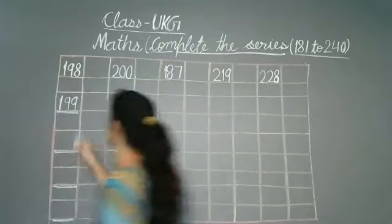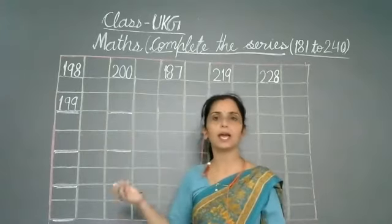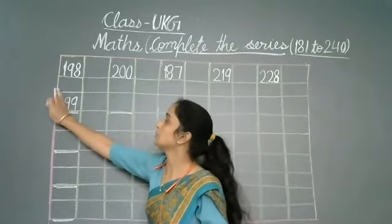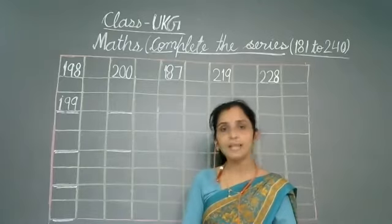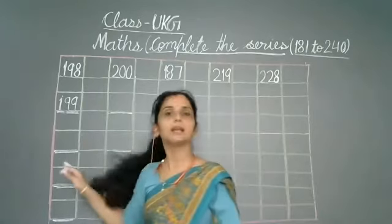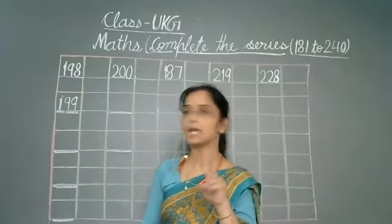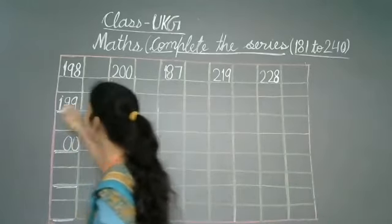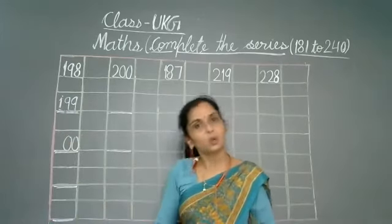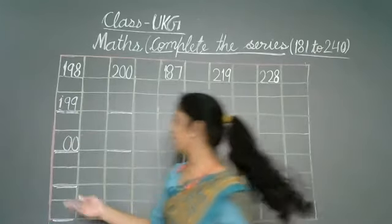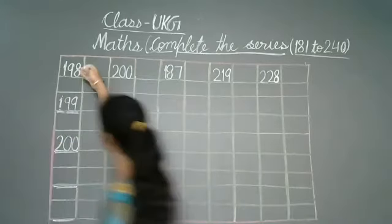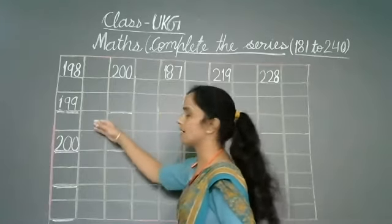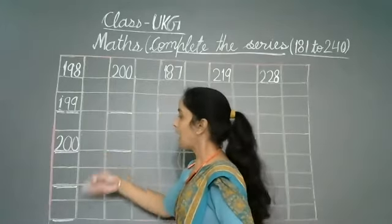Now we can see that 199 is already done. But what will come after that? When you have 99, what do we write? It comes after 100. So we will put here 2, 0 first. Now what comes after 1? 2 comes after 1. So it's 199, then comes 200. After 198 comes 199.